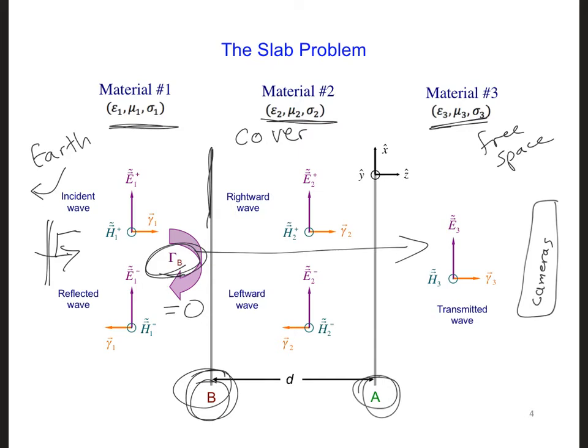And in order for the reflection coefficient at interface B to be zero in the sinusoidal steady state, then we need the input impedance here, eta in must be equal to the impedance of material number one, eta one. So we need eta in here equal to eta one.